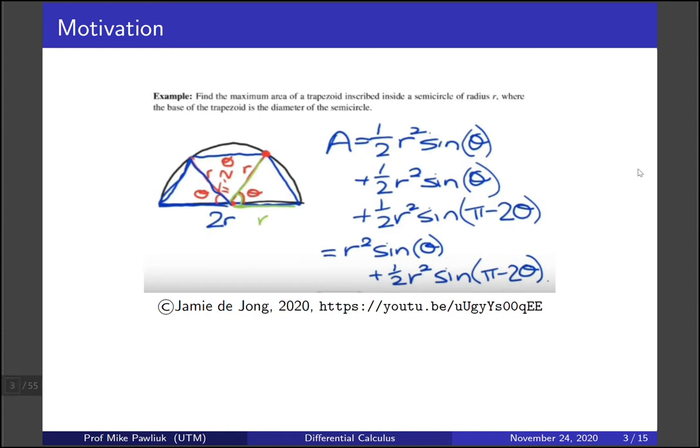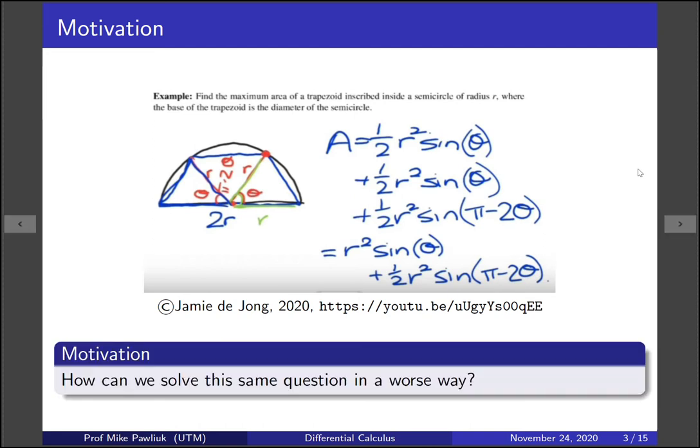Our motivation comes from a previous video. In a previous video by another instructor, they solved the following optimization problem: find the maximum area of a trapezoid inscribed inside a semicircle of a fixed radius where the base of the trapezoid was the diameter of the semicircle. They solved this problem using angles, and our motivation is that we're going to solve it in a different, worse way.